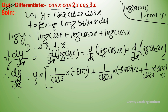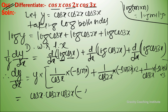So dy/dx equals cos(x)·cos(2x)·cos(3x) into the bracket, and since sin/cos equals tan, we get minus tan(x).